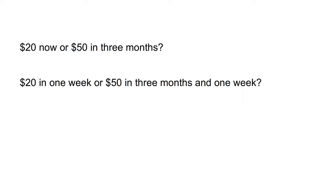Green and friends offered experimental subjects choices between a smaller reward and a larger delayed reward while varying the delay. For example, they offered the choice between: first, $20 now or $50 in three months; second, $20 in one week or $50 in three months and one week. Across the choices offered to the experimental subjects, there was a consistent effect whereby incrementing the delay for both rewards equally would result in a switch from the small sooner reward to the later larger reward. Adding one week to both rewards in the first choice can result in people changing their preference between the sooner and later reward.